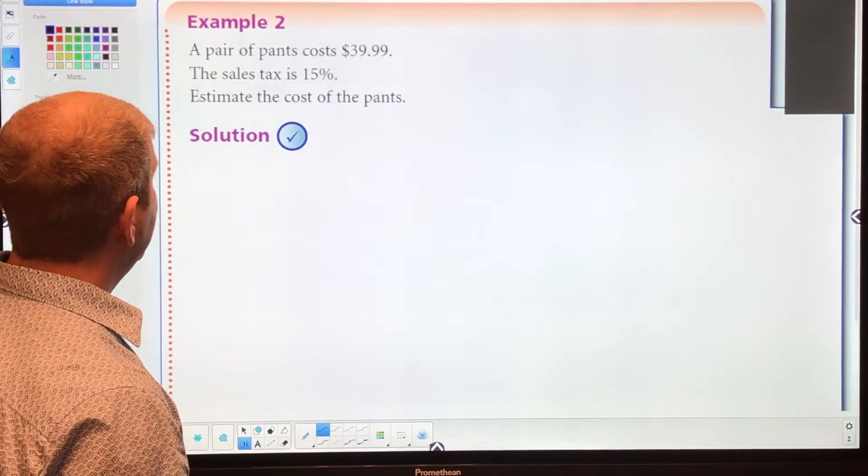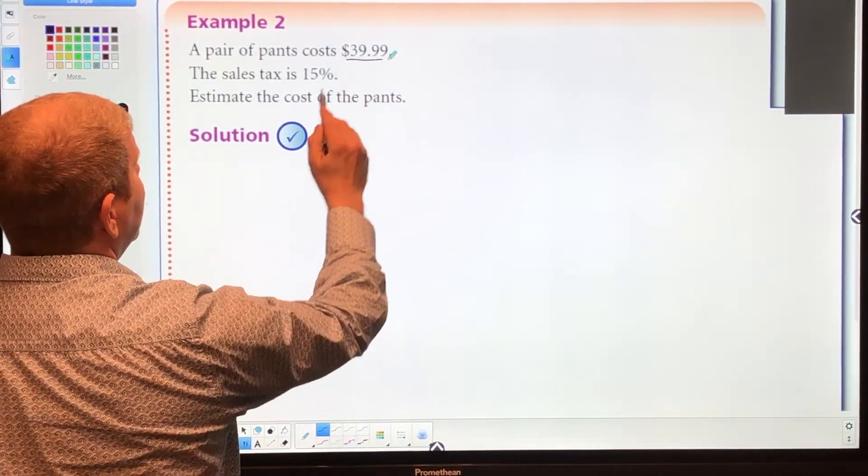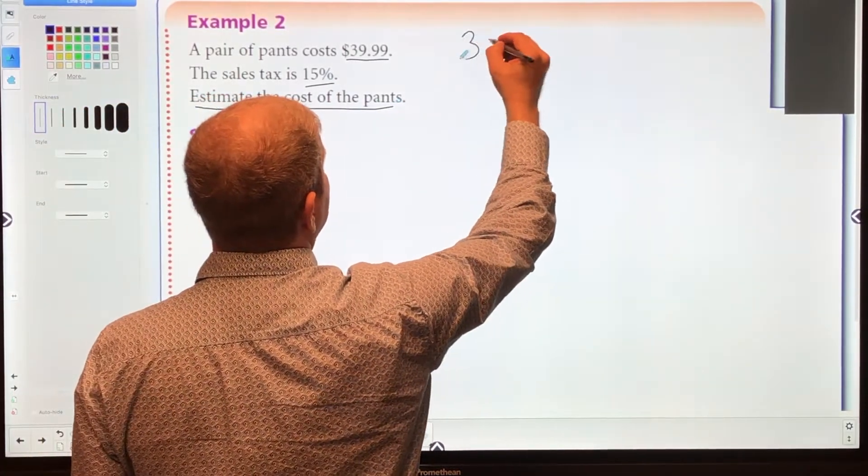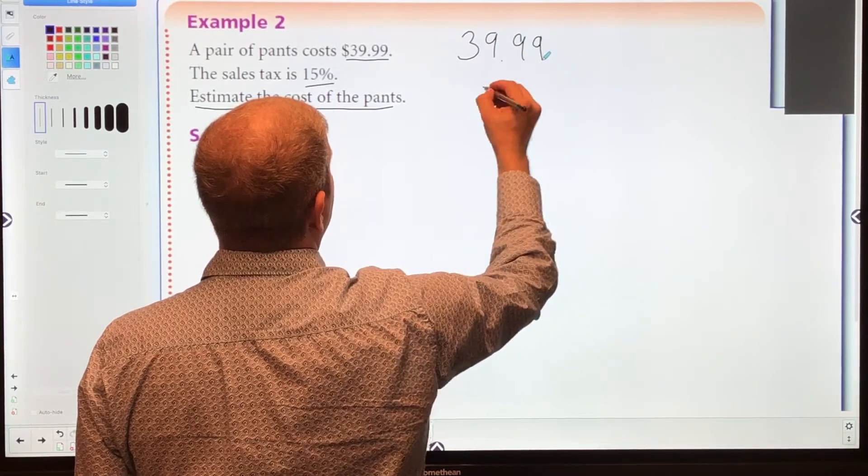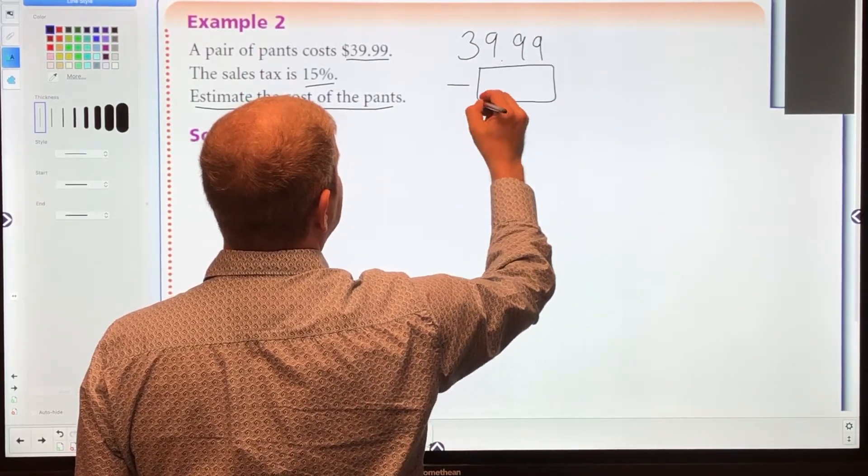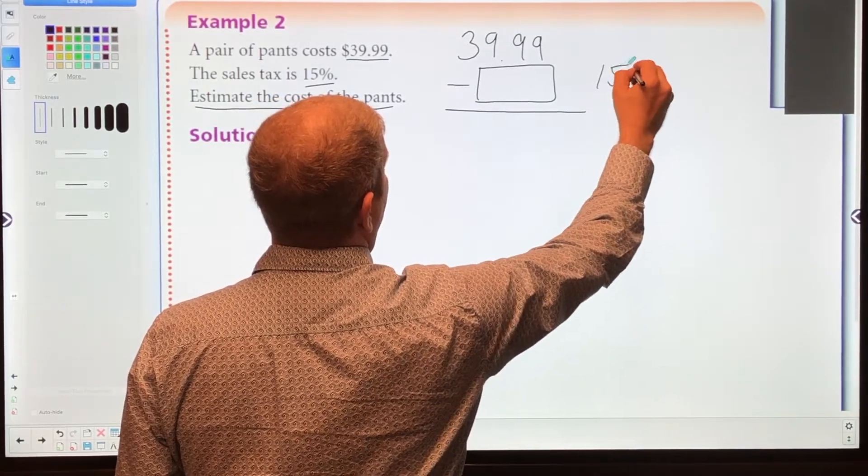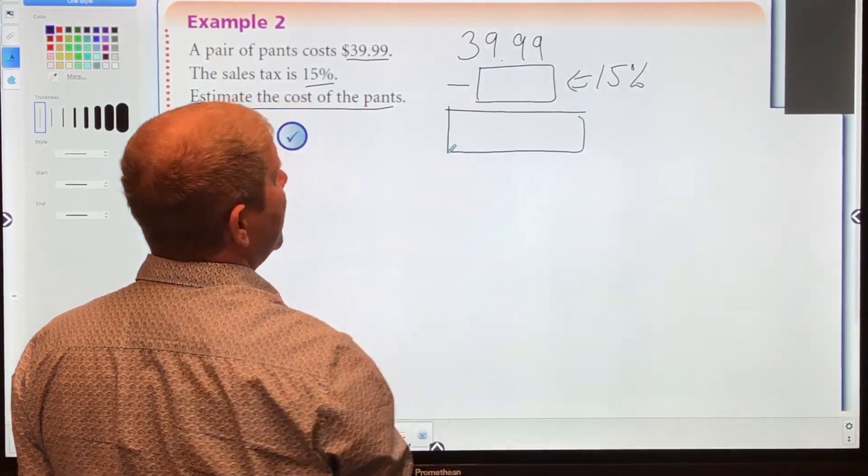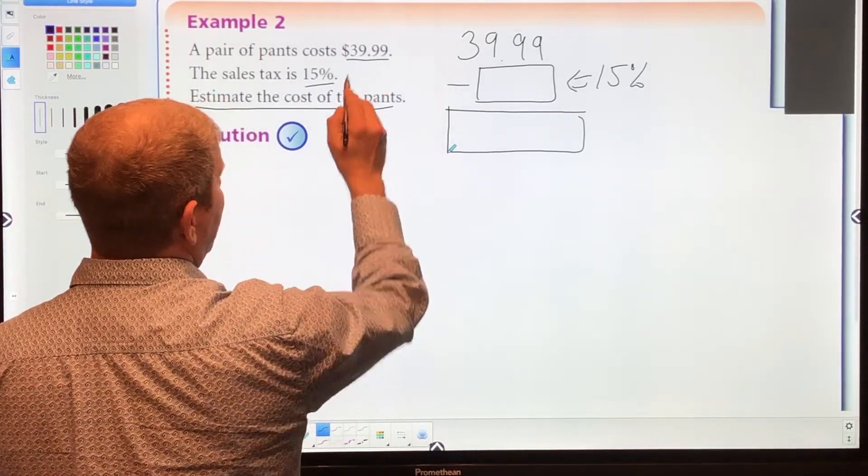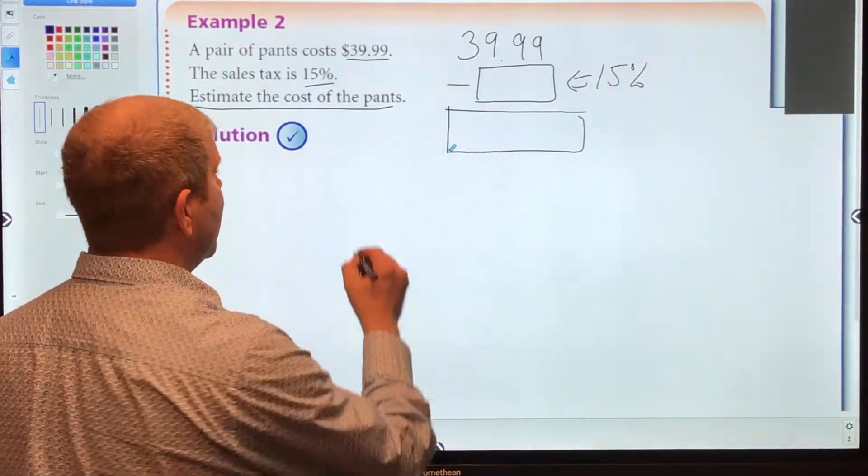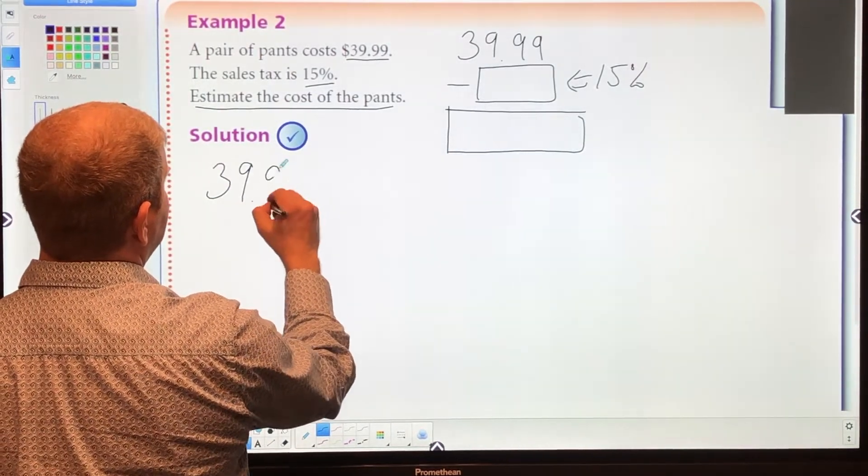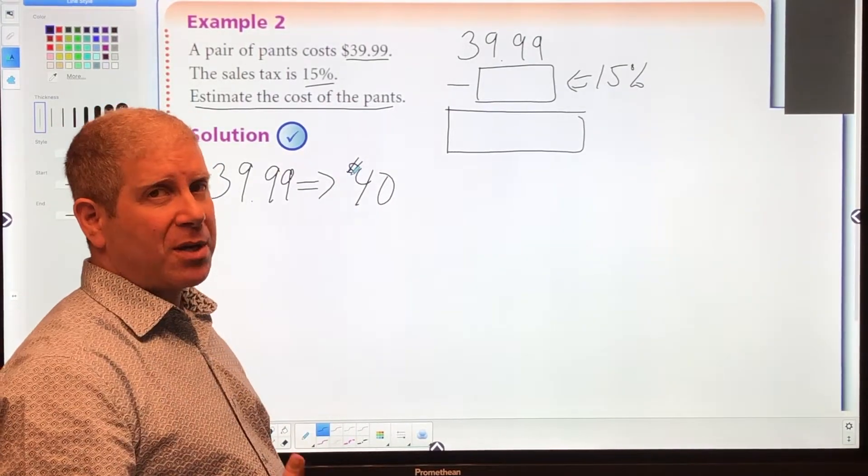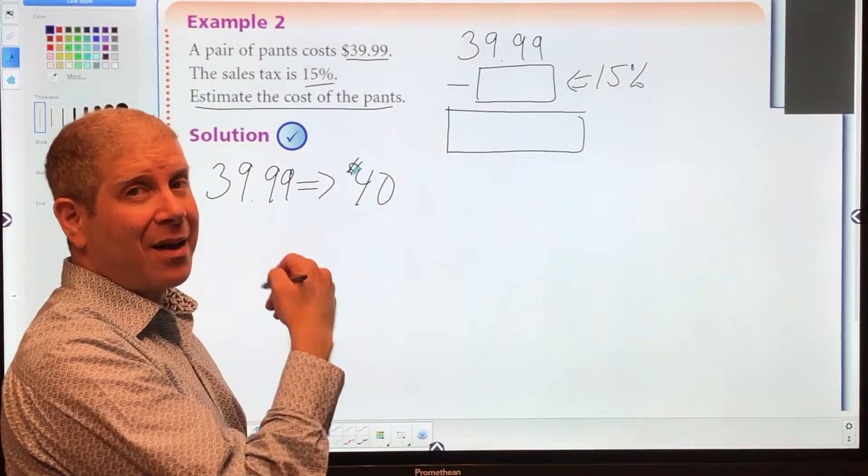Let's look at example number two. A pair of pants costs $39.99. Sales tax is 15%. We want to estimate the cost of the pants. We've got $39.99 and we want to subtract whatever the tax is, the 15% off, and then we'll get a final amount. First, let's change $39.99 into an easier number. Let's change it to $40 for calculating our taxes.